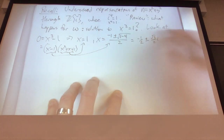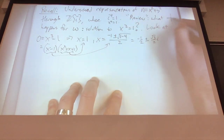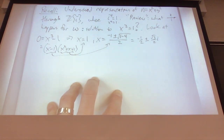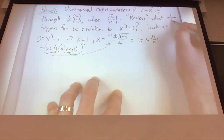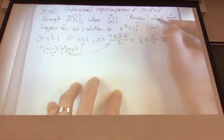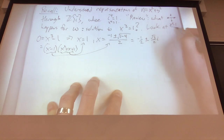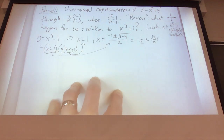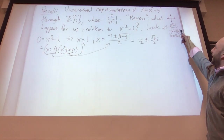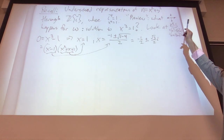Where are these three points geometrically? The solutions to x to the fourth equals one are i, one, negative one, and negative i — because x to the fourth minus one factors as x squared minus one times x squared plus one, giving solutions one, negative one, i, and negative i.